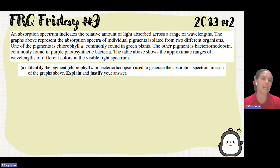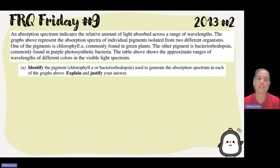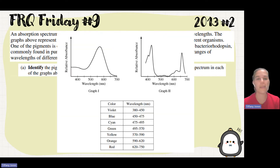They want us to identify the pigment — whether chlorophyll or bacteriorhodopsin — that was used to generate the absorbance spectrum in each of the different graphs, and then explain and justify our answer.